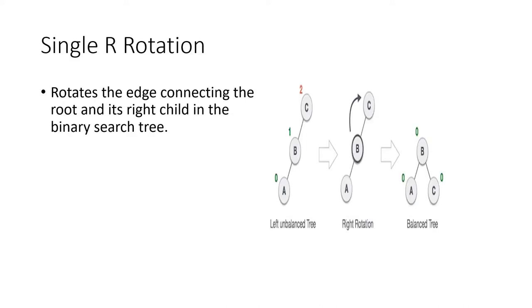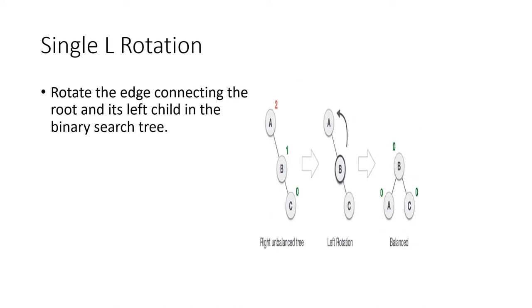While creating an AVL Tree, we need to perform some rotations. First is single R rotation, where R is known as right. It rotates the edge connecting the root and its right child in the binary search tree. Here is an example. The balance factor of C is 2, so this is an unbalanced tree. To balance the tree, rotate node C to the right. So it forms B as a root node and A, C are the leaf nodes. The balance factor of A, B, C are 0. So this is a balanced AVL Tree.